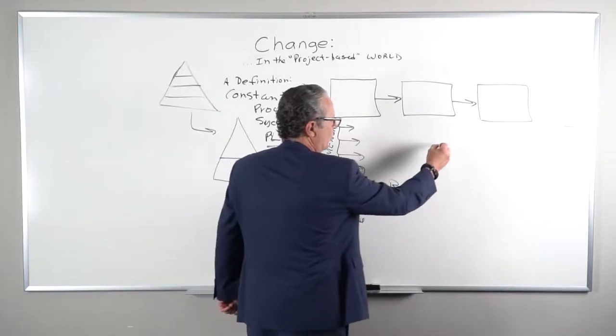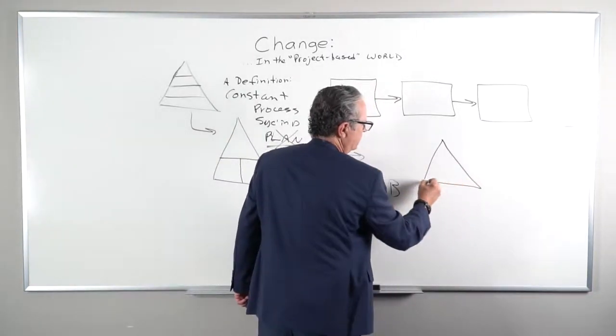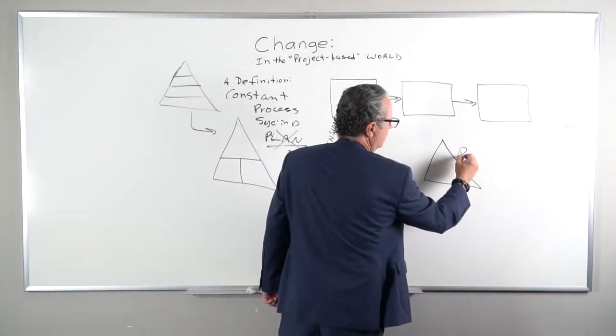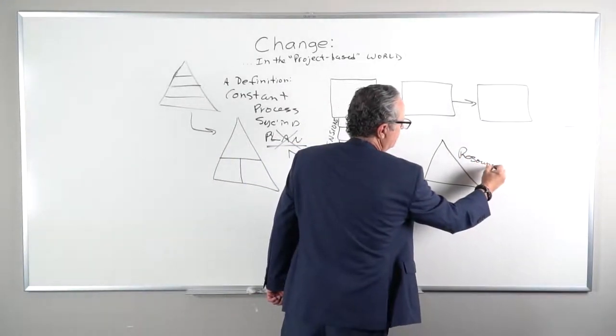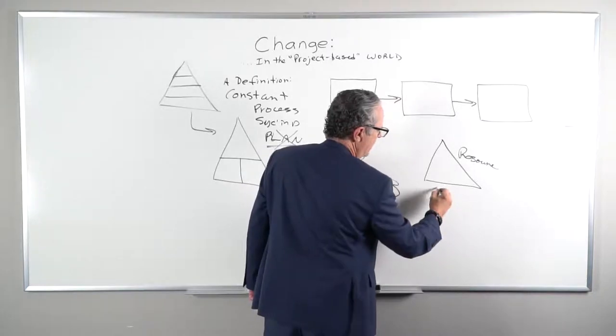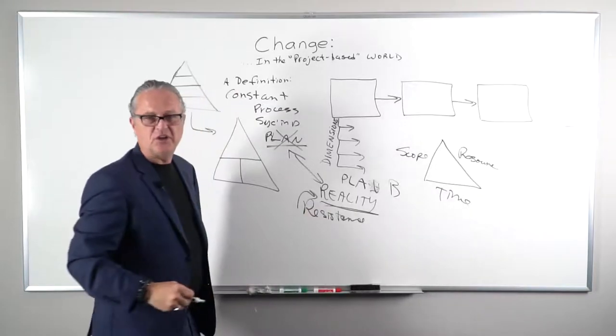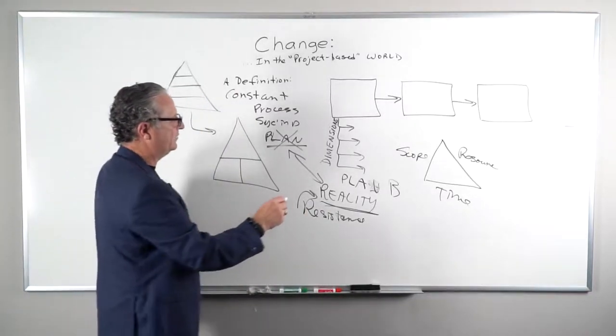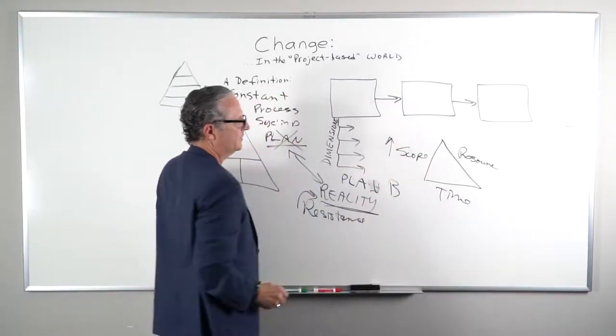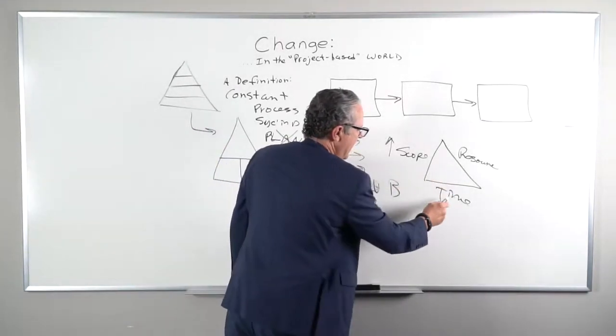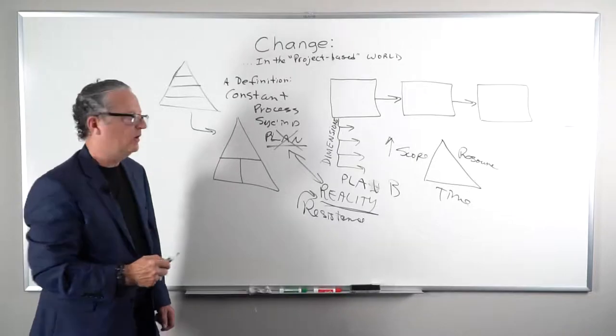Well, we know this thing called the triple constraint model. It says there's resource, there's time, and there's scope. So what are we going to change? The scope has increased. What do we got to do? Add resource and or add time or reduce scope.